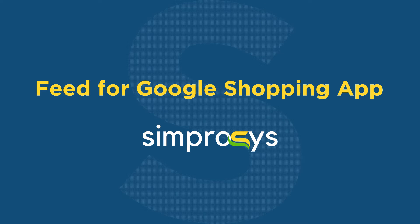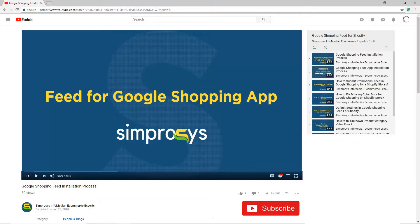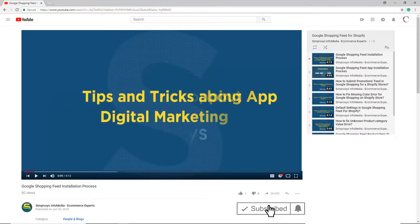Hello friends, welcome to the help videos of Feed for Google Shopping app by Symprosis. In this video, we will walk you through the ways we can use the bulk edit feature for assigning a gender attribute for our products. Please subscribe to our channel to get tips and tricks about digital marketing, and press the bell icon to get notified instantly once we upload any new video.